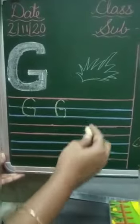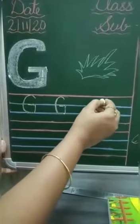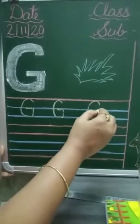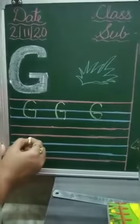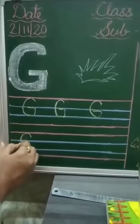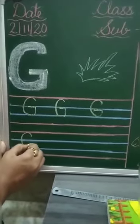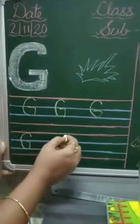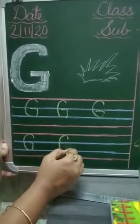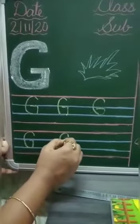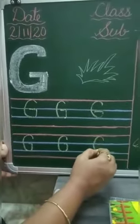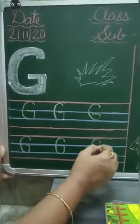Okay kids, now we will say and write. G for grabs, ga ga grabs. G for gate, ga ga gate. G for girl, ga ga girl. G for grass, ga ga grass. G for goat, ga ga goat. G for gumboot, ga ga gumboot. G for grabs, ga ga grabs. G for gate, ga ga gate.